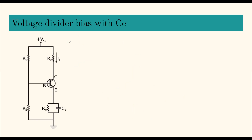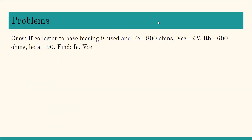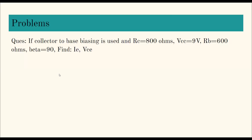That covers all the types of bias, but numerical problems can also be asked. I have taken one such numerical problem. In collector-to-base biasing, one resistance is connected between the collector and the base — that is why it is called collector-to-base bias. You explain the setup and then derive the expressions.